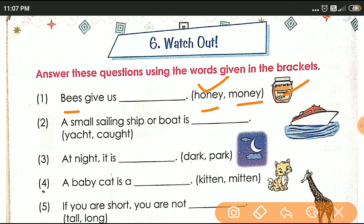Second: Small sailing ship or boat is dash. Small sailing ship or boat — मतलब जो छोटा ship or boat है, देखो picture में भी दिया गया है, वो पानी में है। वो उसको क्या बोलते हैं? Yacht or cart. Yacht means boat को बोलते हैं — boat or ship. यहाँ पे हम लिखेंगे: yacht.